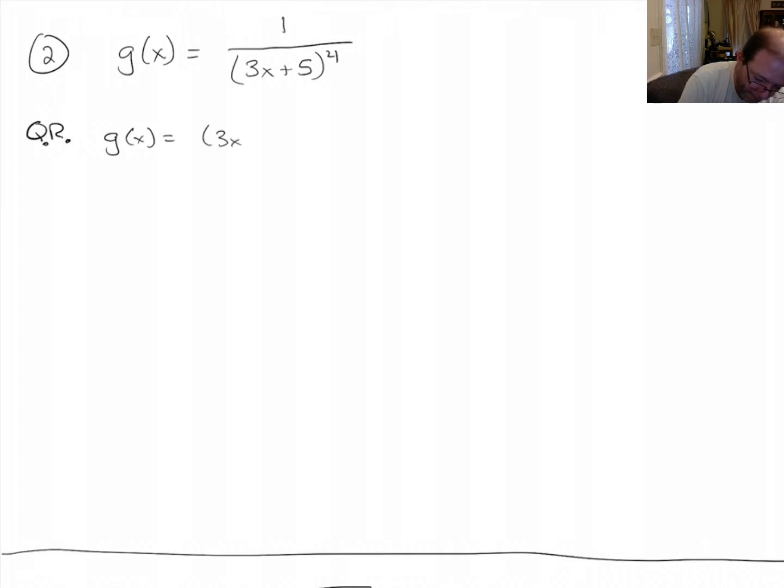We get low d high. Derivative of 1 is just 0. Minus high d low. Derivative of the bottom is 4 times 4 times (3x + 5) to the third times 3. Low d high minus high d low over low squared.